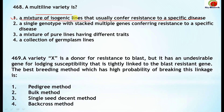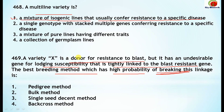Question 469: variety X is a donor for resistance to blast disease, but it has an undesirable gene for lodging susceptibility that is tightly linked to the blast resistance gene. The breeding method with high probability of breaking this linkage — the correct answer is the backcross method.